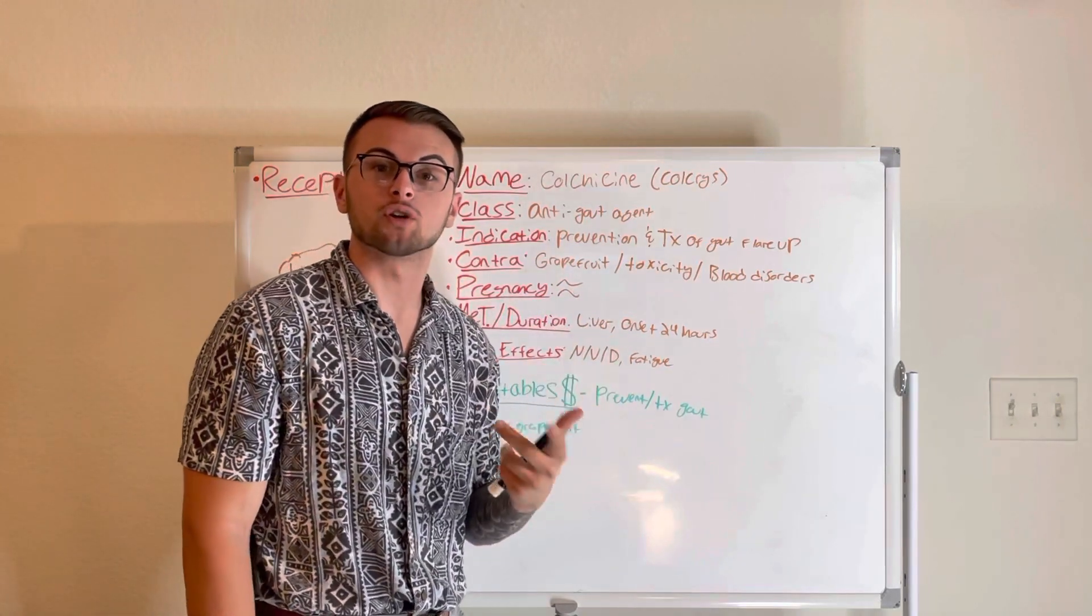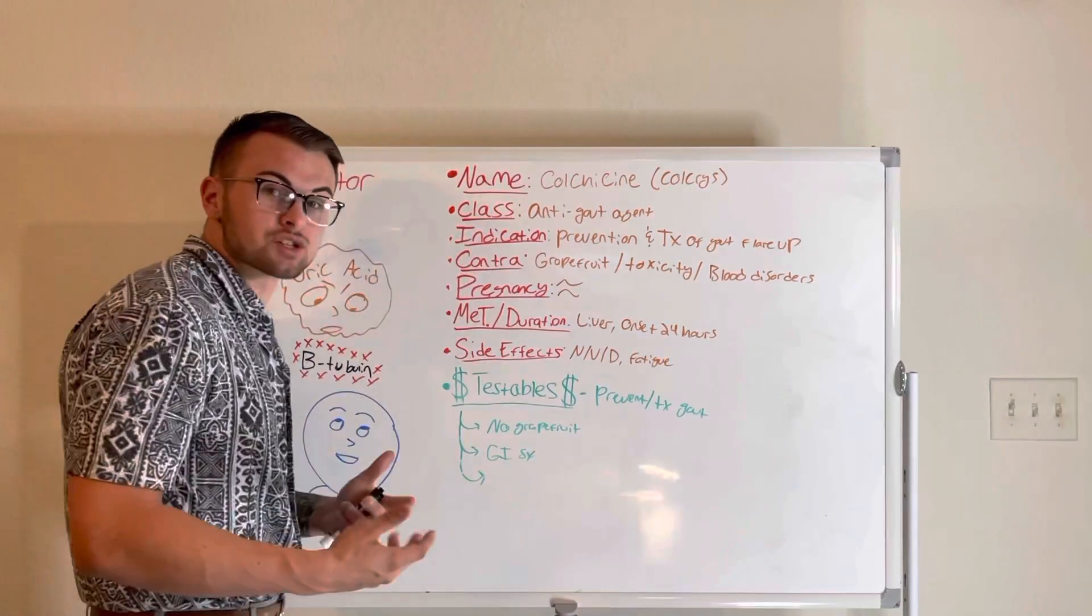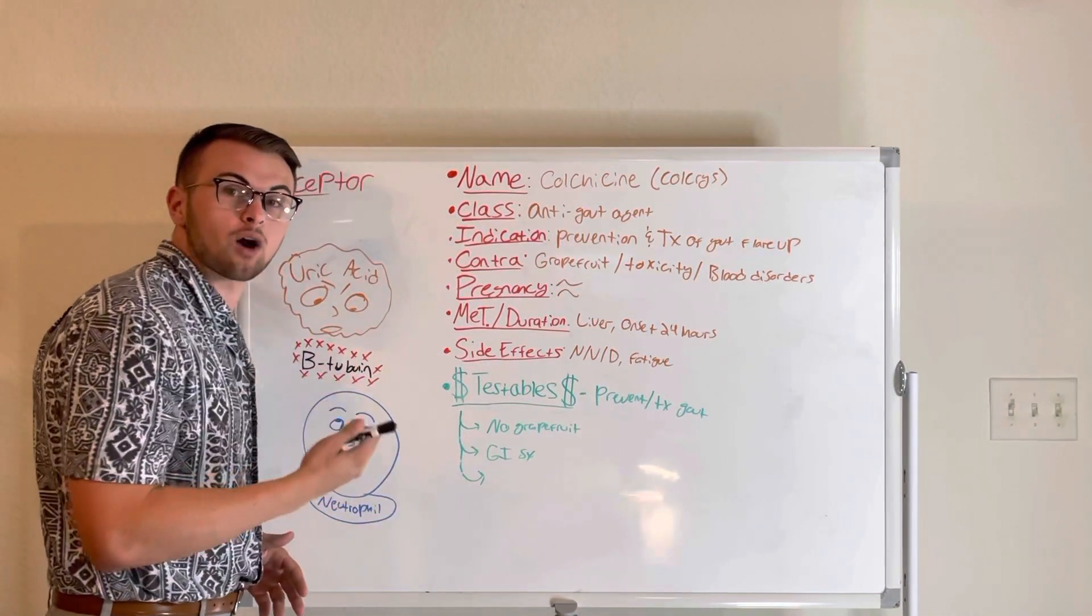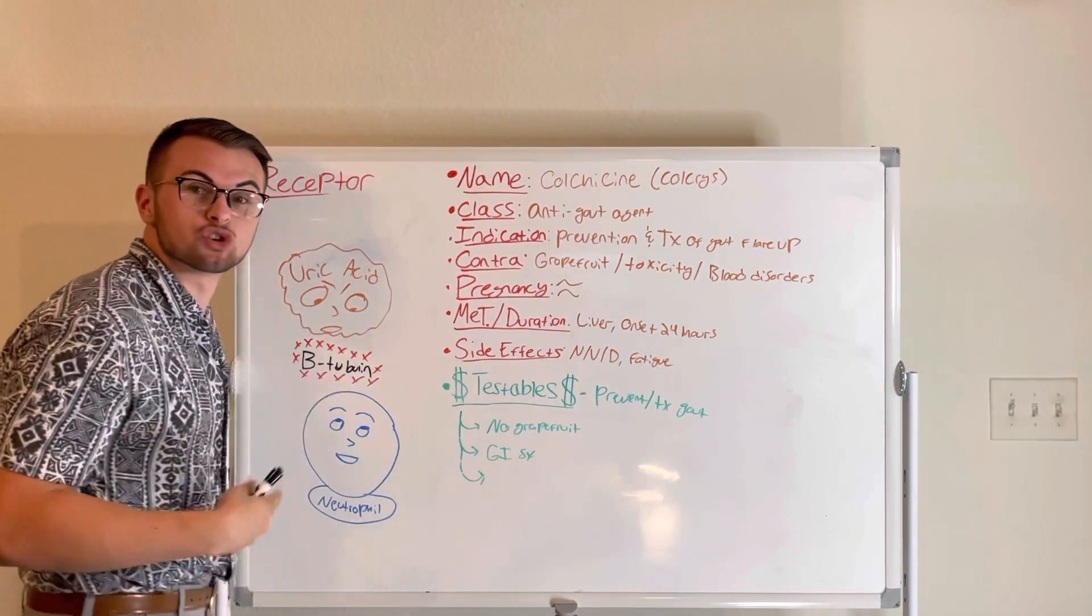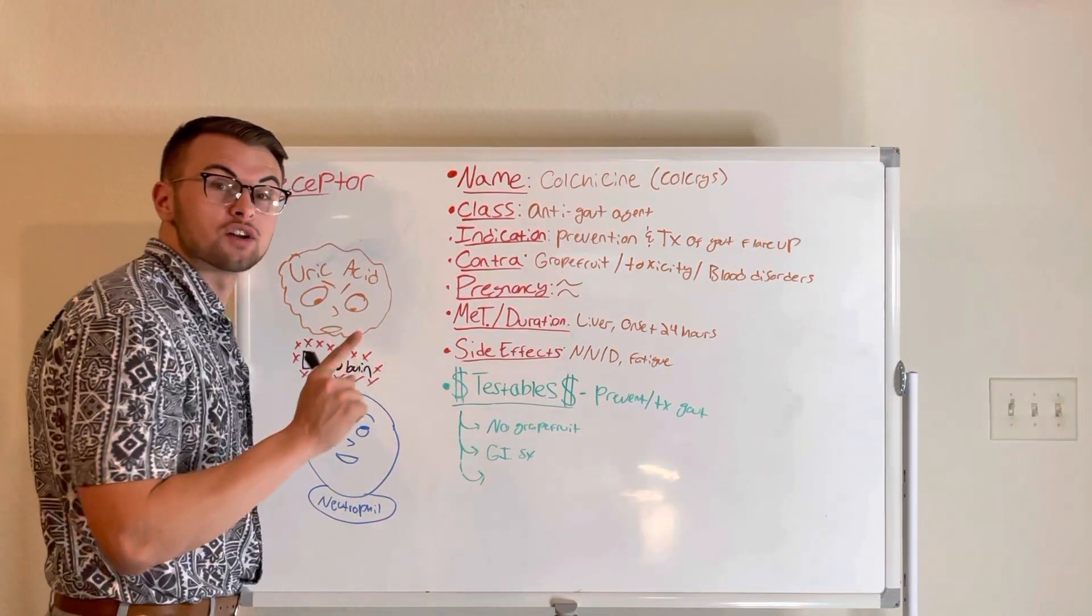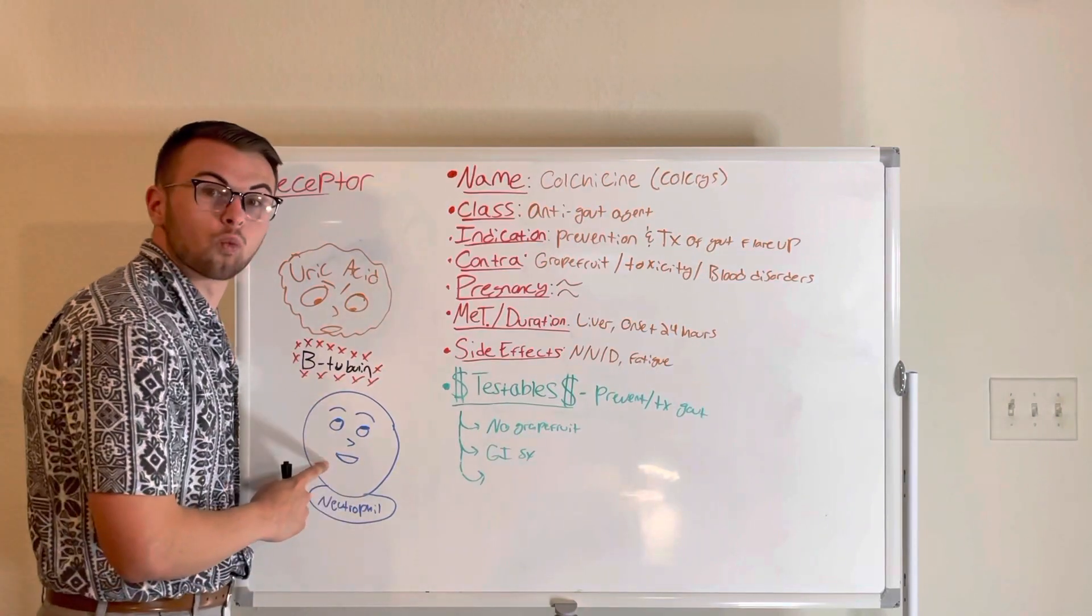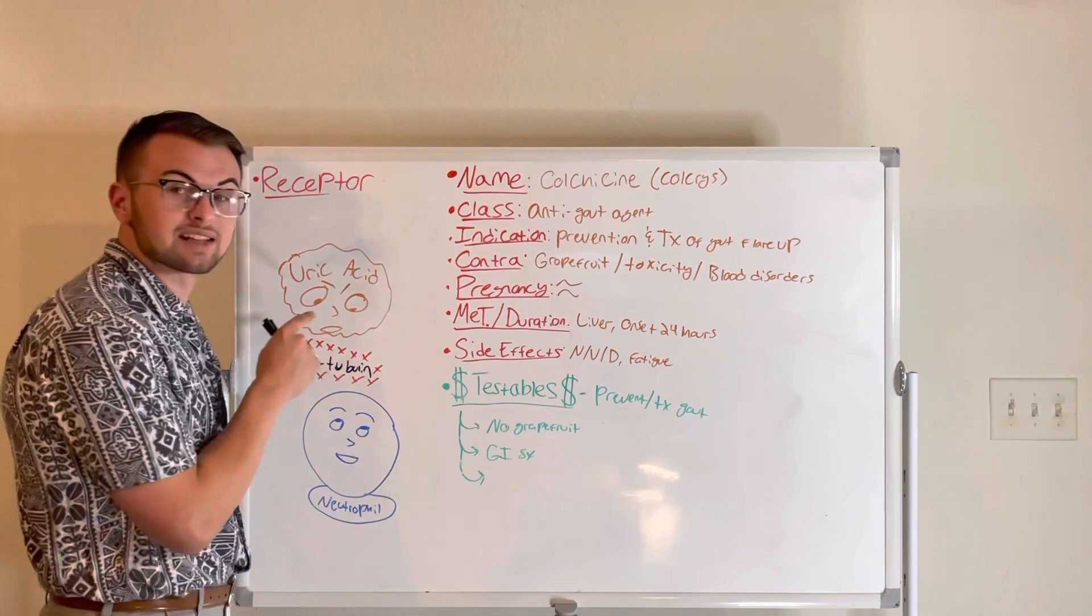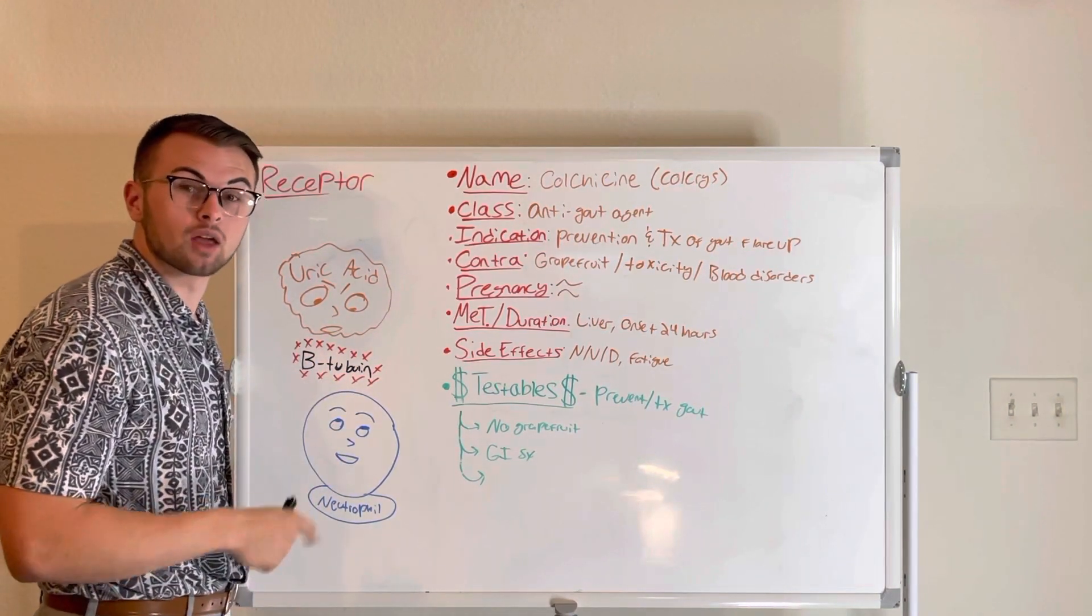Now for the mechanism of action of this drug, we should know that normally our gout patients have buildups of uric acid crystals in their joints, specifically their big toes, which cause severe pain. Our body sends white blood cells like neutrophils to attack and break down these crystals, which causes severe pain.